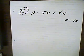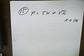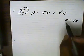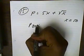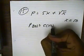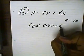We want to find the profit and the marginal profit for 50 magazines. Well, for 50 magazines, we have p of 50 equals 5 times 50 plus the square root of 50.